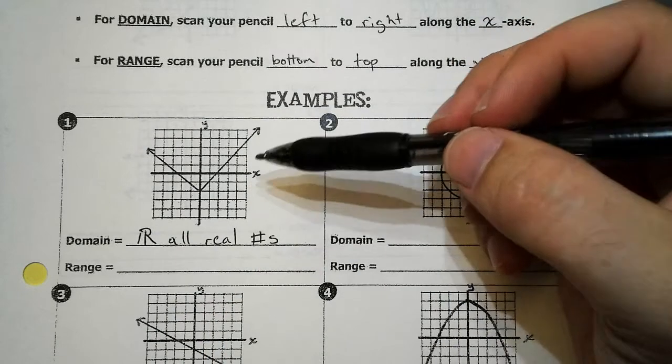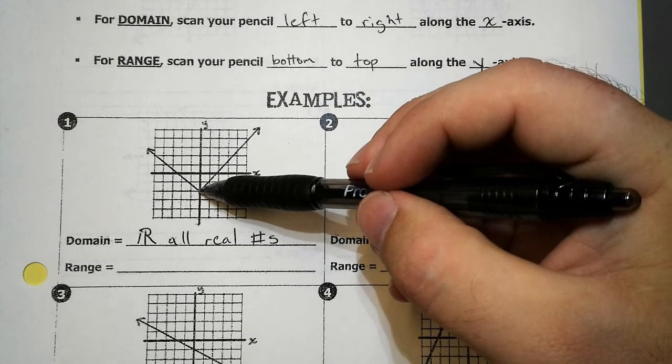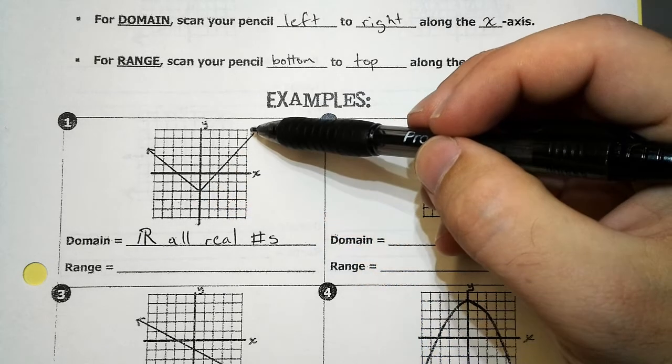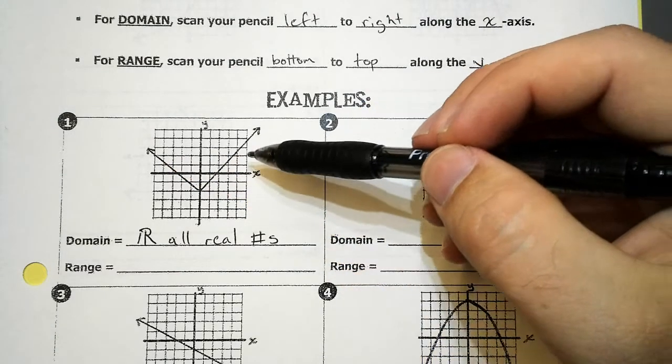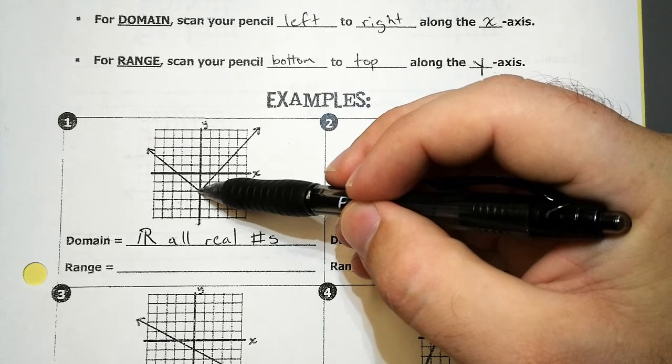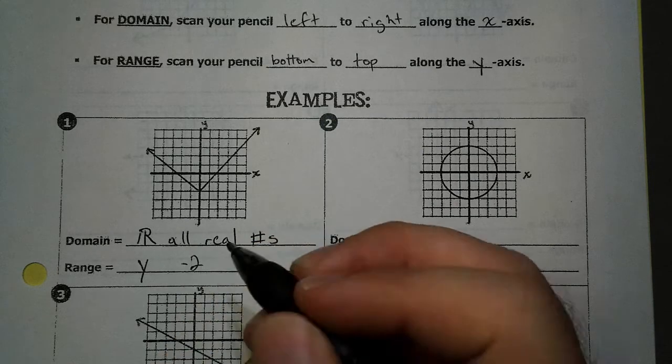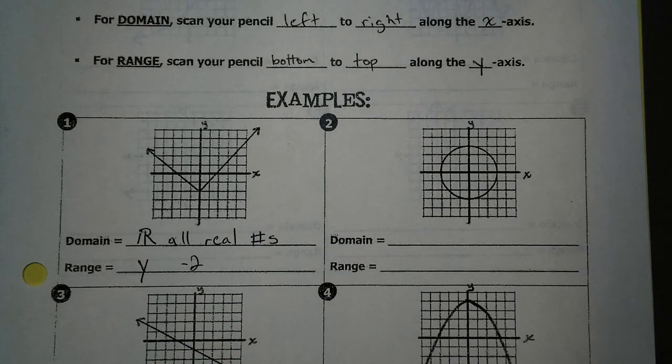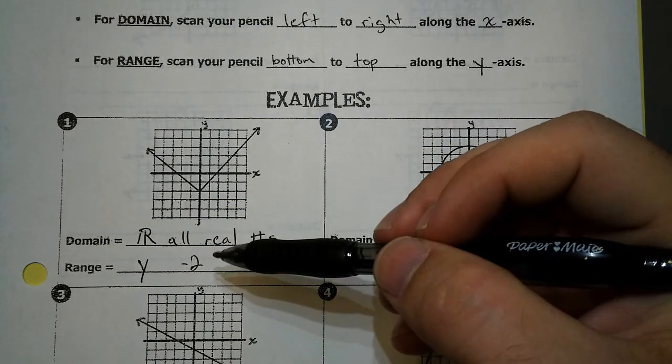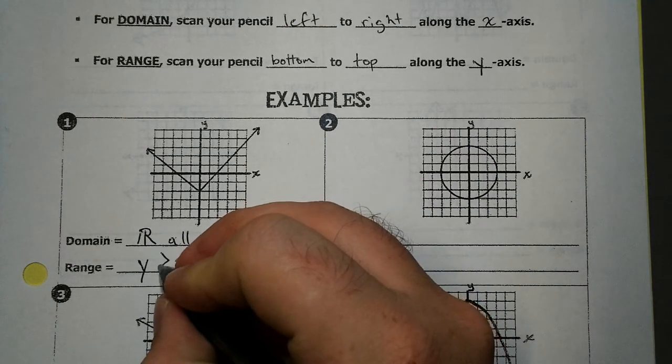Now let's look at the y-axis. Scan from the bottom to the top. Scanning from the bottom, it stops going down right here. Now if I look going up, this arrow continues. So the y values is going to keep going forever, but it's going to stop right here at negative two. So we're just comparing our y's to negative two. Remember, if there's one stop, there's only one symbol. Are my y's bigger or smaller than negative two?